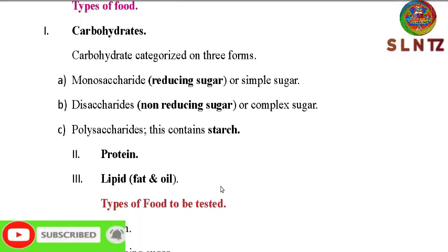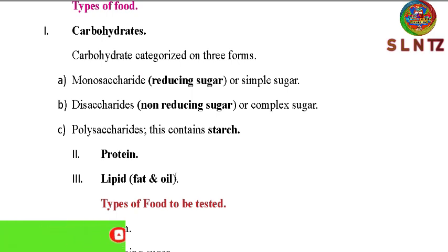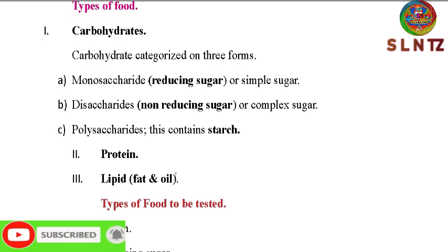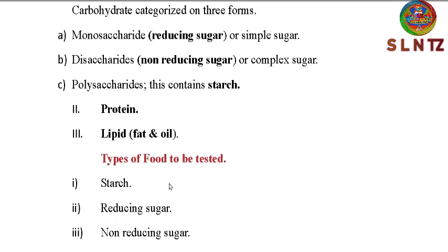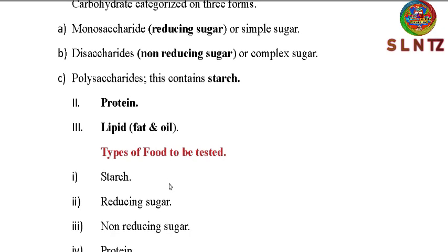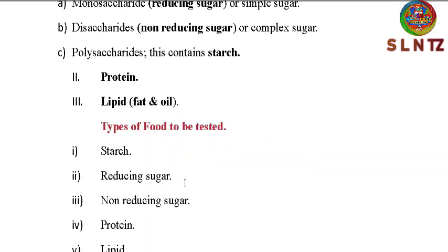Number two food type is protein. Number three is lipid. Lipid contains fats and oils. Fat can come from foods like milk or bread. Fats are animal lipids and oils are plant lipids. So we can summarize the types of food to be tested in biology practicals: we have starch, reducing sugar, non-reducing sugar, protein, and lipid.